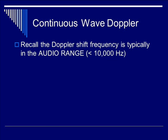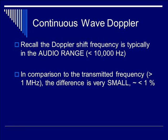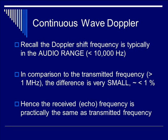Recall that the Doppler shift frequency is typically in the audio range, less than 10,000 Hz. Therefore, in comparison to the transmitter frequency, which is typically greater than 1 MHz, the difference is very small. Therefore, the received frequency is practically the same as the transmitter frequency.